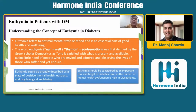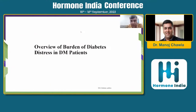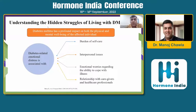Euthymia should also be considered as an important tool and target in diabetes care, as the burden of mental health dysfunction is high in patients with diabetes — something which is rather ignored by most of us who treat. There is a huge burden, and when you look at the struggles of those living with diabetes, consider the problems they go through on a daily basis. Diabetes-related emotional distress is associated with the burden of self-care, interpersonal issues, emotional worries regarding the ability to cope with illness, and relationships with caregivers and healthcare professionals. This is an ongoing cycle through the life of the individual.